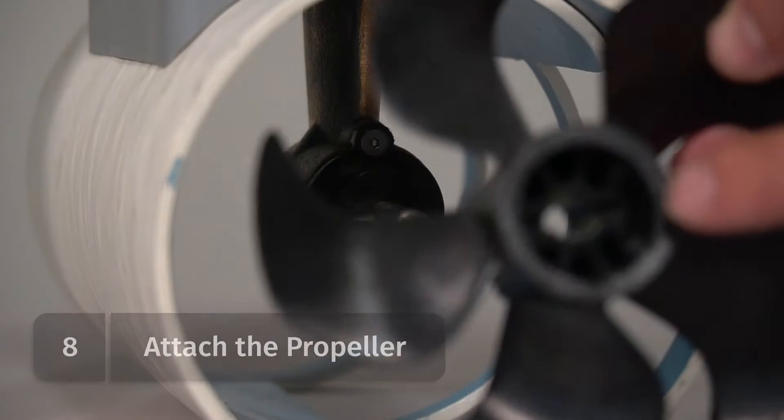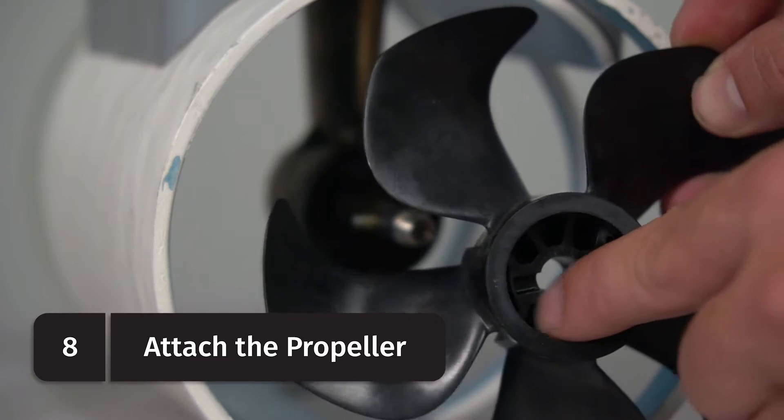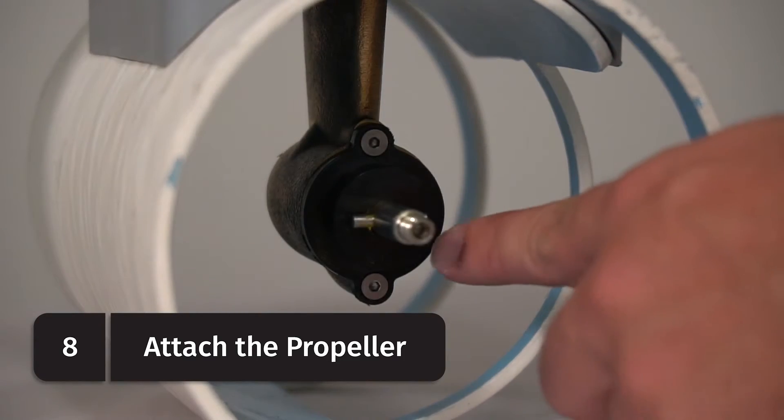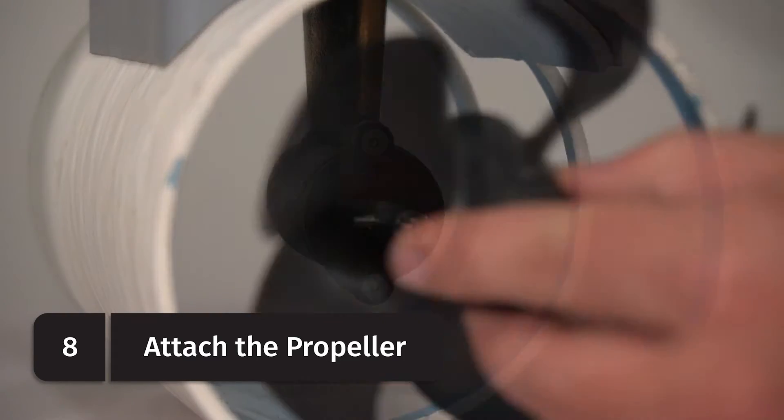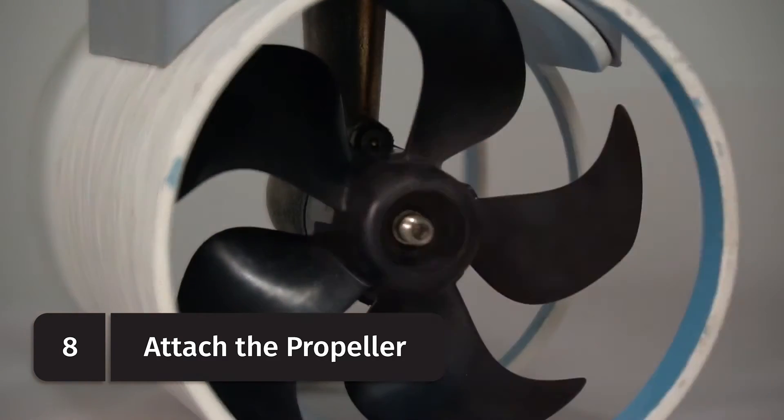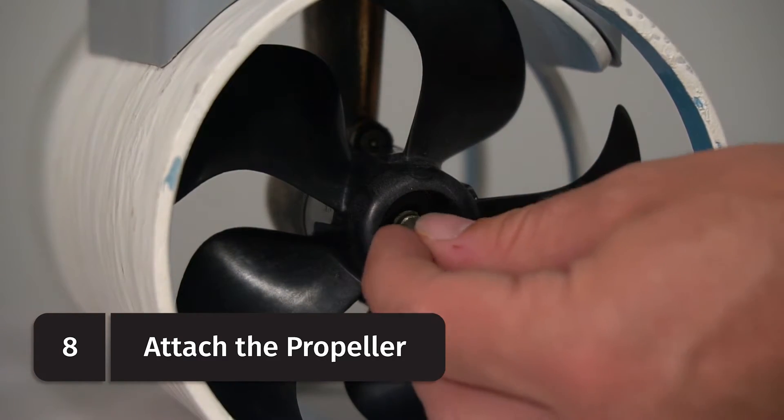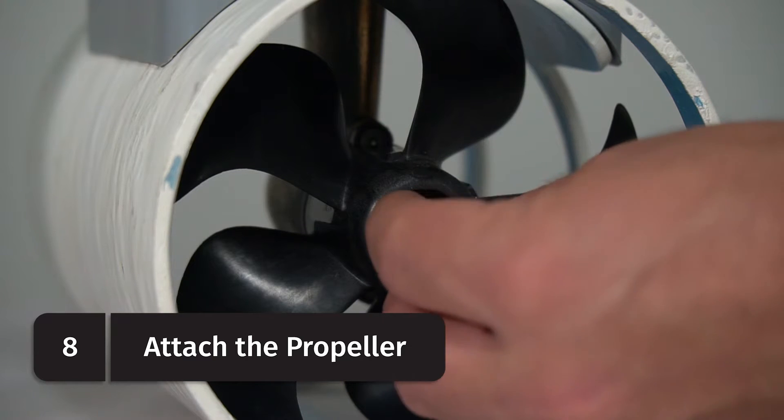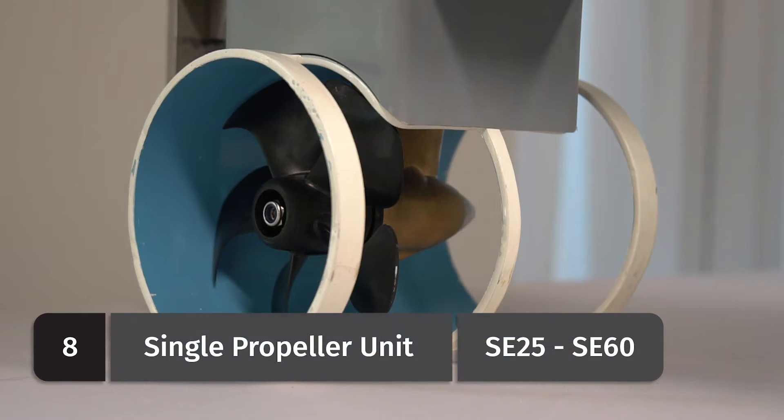To install the propeller on the gear leg, you'll simply line up the slot on the back of the propeller with the propeller drive pin that is pre-installed in the propeller shaft and then you'll secure it in place using a washer and a lock nut. On a single propeller unit models SE25 through SE60, the propeller should be installed facing the starboard side of the boat.